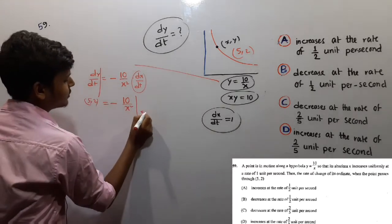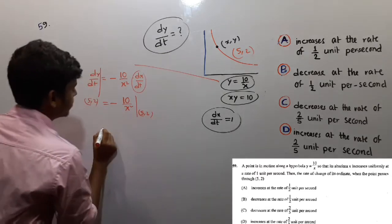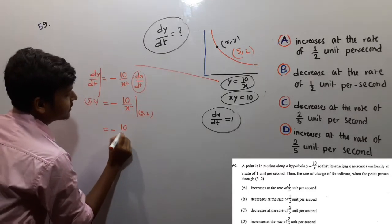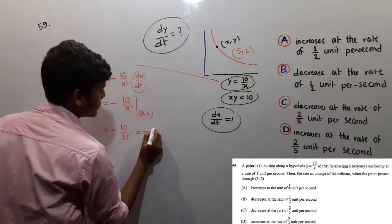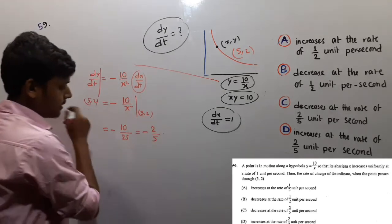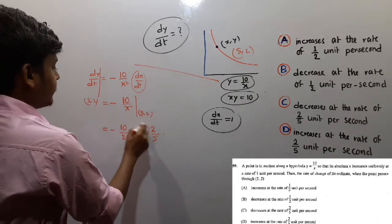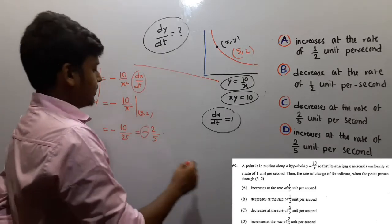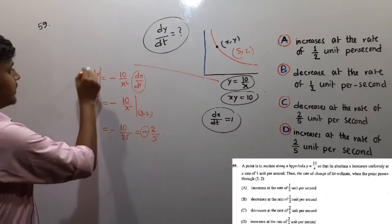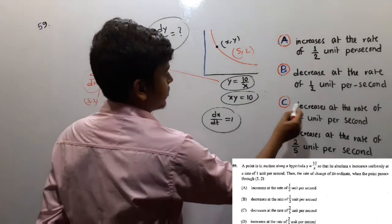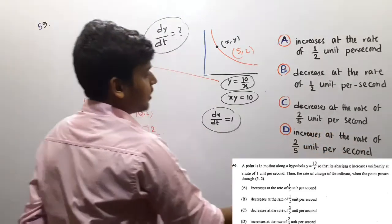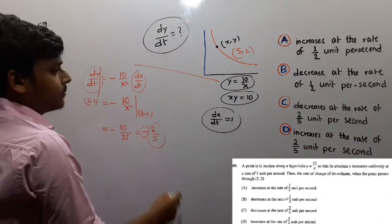At point (5, 2), dy/dt equals -10 by 5 square, which is 25, that means -2 by 5. As the negative is present, obviously it is decreasing at the rate of 2 by 5 per second.